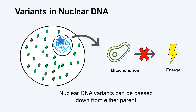In addition to variants in the mitochondrial DNA, sometimes variants in nuclear DNA can affect how mitochondrial proteins are made and how mitochondria work in the body. One important difference about nuclear DNA compared to mitochondrial DNA is that it is passed down from both parents. Variants in nuclear DNA can also occur by chance and be new to the individual.